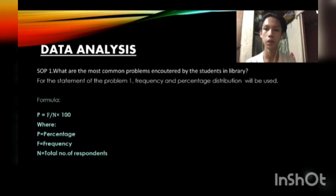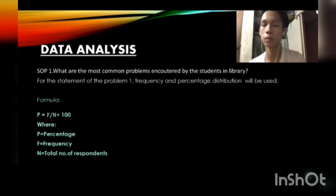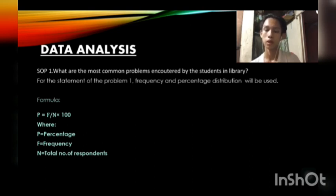Good day, I'm Manuel Sibaldi Jr. of Group 9, and I am here to represent and discuss the analysis of the data on statement of the problem number 1, which is: what are the most common problems encountered by students in a library? For statement of the problem number 1, we will be using the formula frequency and percentage distribution, where T equals F over N multiplied by 100, where T is percentage, F is frequency, and N is the total number of respondents. By using this formula, we will get accurate answers for statement of the problem number 1.